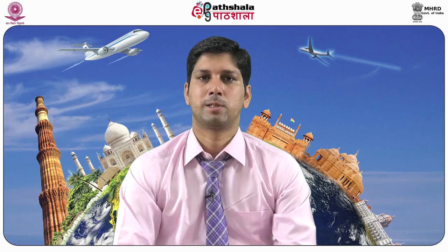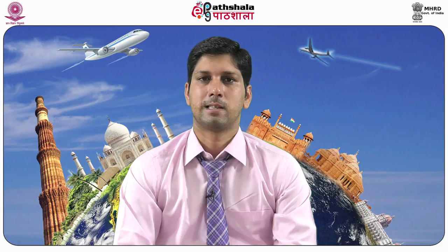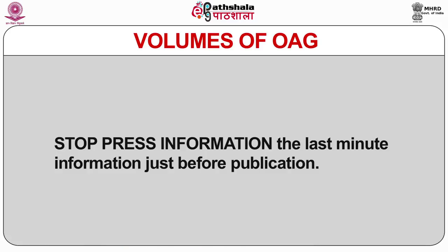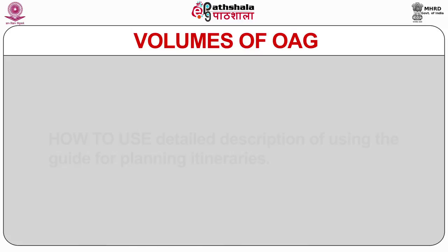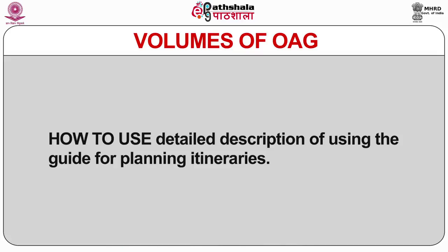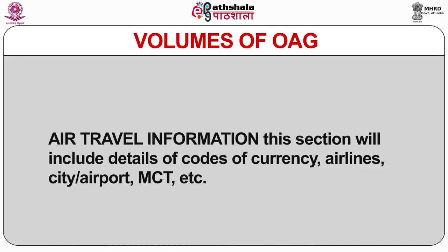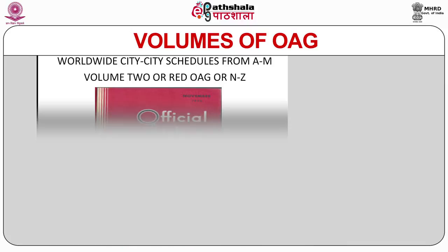The first is the Blue OAG — Worldwide City-City Schedules from A to M. As this volume covers all airports from alphabets A to M and is blue in color, it is known as Blue OAG. The main sections include: Stop Press Information (last-minute information before publication), Contents, How to Use (detailed description for planning itineraries), and Air Travel Information covering currency codes, airline codes, city and airport codes, etc.